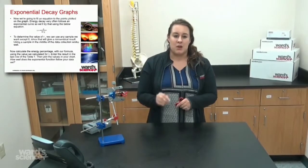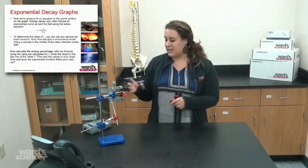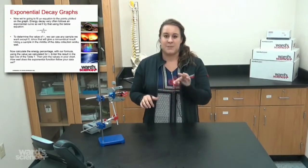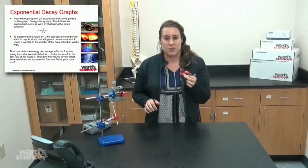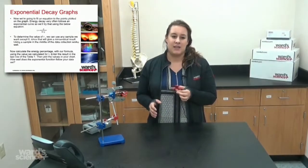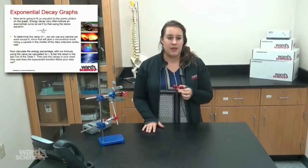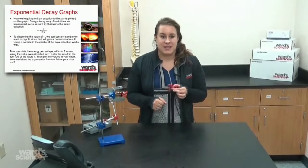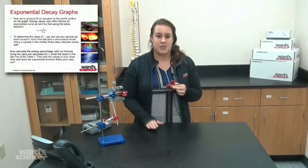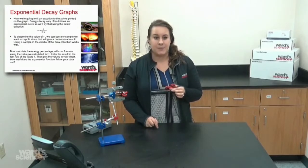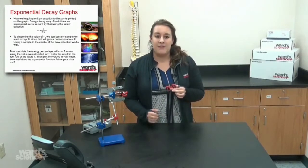Using a sample in the middle of the data collection works well because that's when the photo gate is in its best data collection and that's when the spinner's kind of reached its ideal point. So we always like to pick a nice middle value. Now we're going to calculate the energy percentage with our formula using the value we calculated for t and enter the result in the last row of the table. Then we're going to plot the values in the chart.